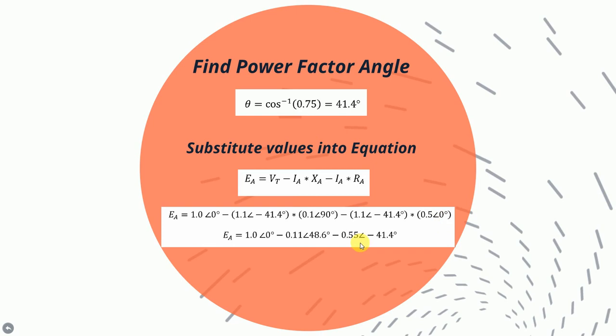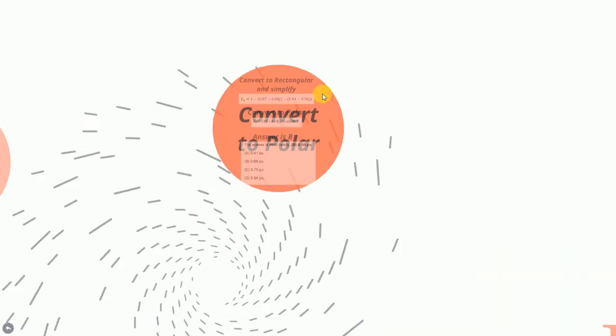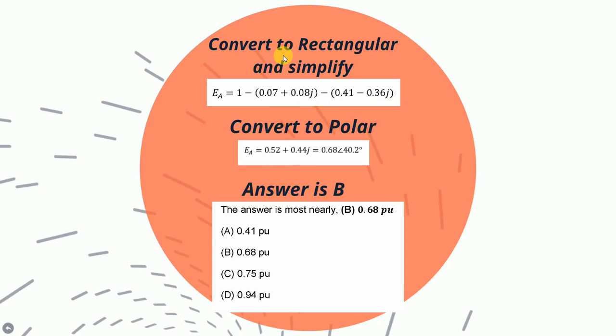So when you multiply everything out, you get this. But in order to simplify, you must first convert. So you convert the previous equation to rectangular, and you get this result.